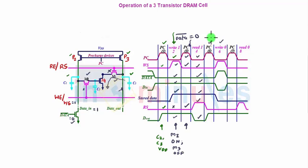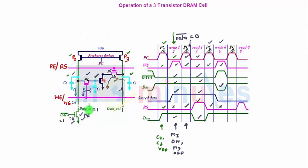For write 0: make pre-charge equal to 1, then set write and read signals both to 0 to reset from the previous cycle. C2 and C3 return to VDD. Now to write a 0, write signal goes to 1 and read signal stays 0 — M2 is on, initially C2 is at VDD and C1 is also charged from the previous write. Because we are writing 0, data bar is 1, turning on that transistor and data in goes to 0. C2 and C1 both get a path through M2 and NX to discharge, so C1's charge moves towards 0 — the 0 is written.